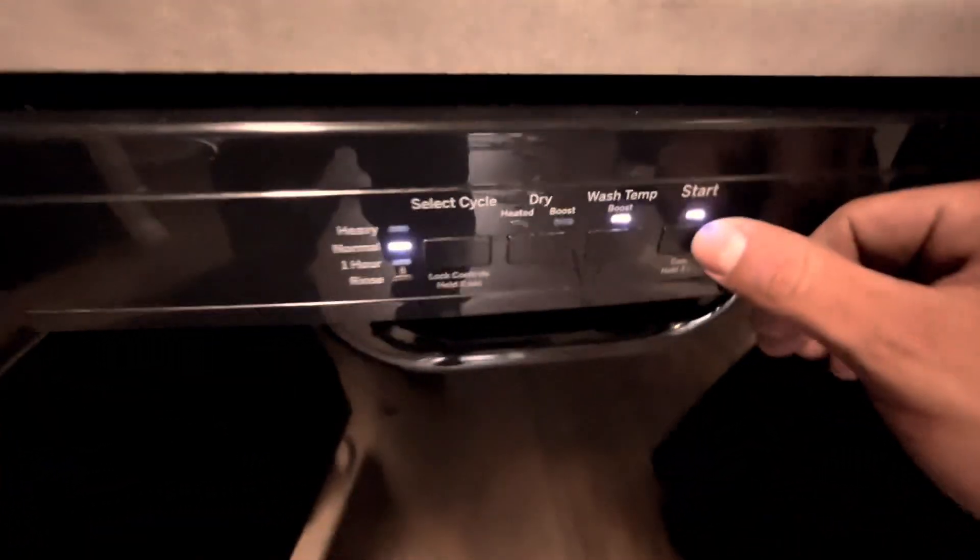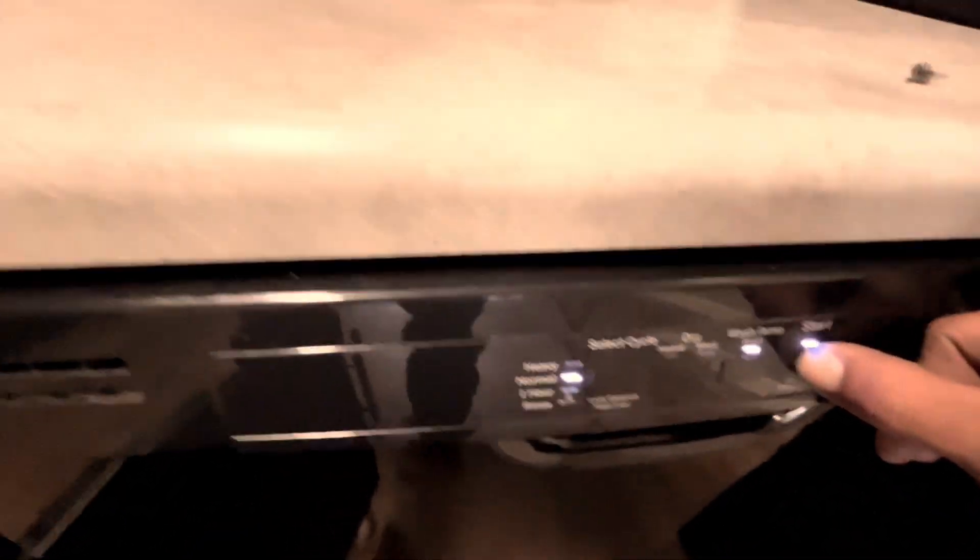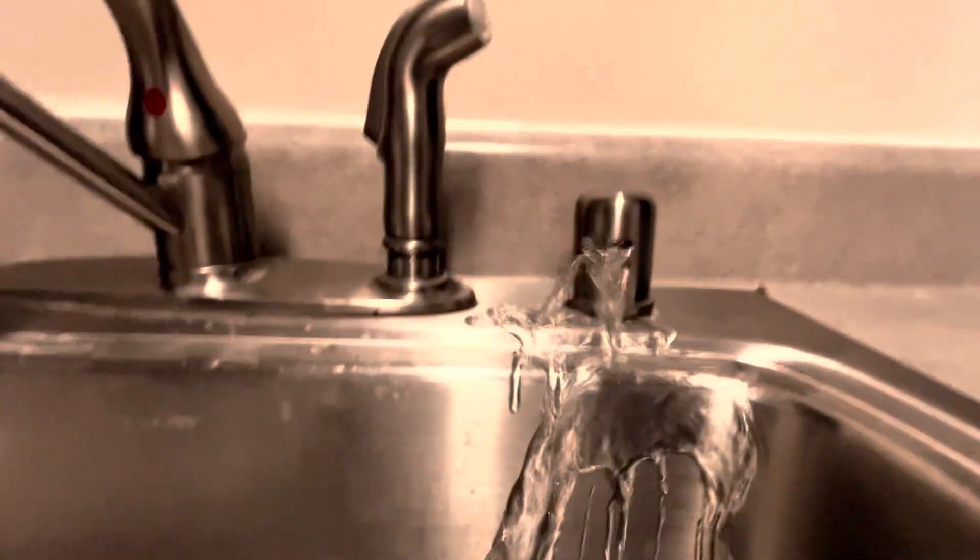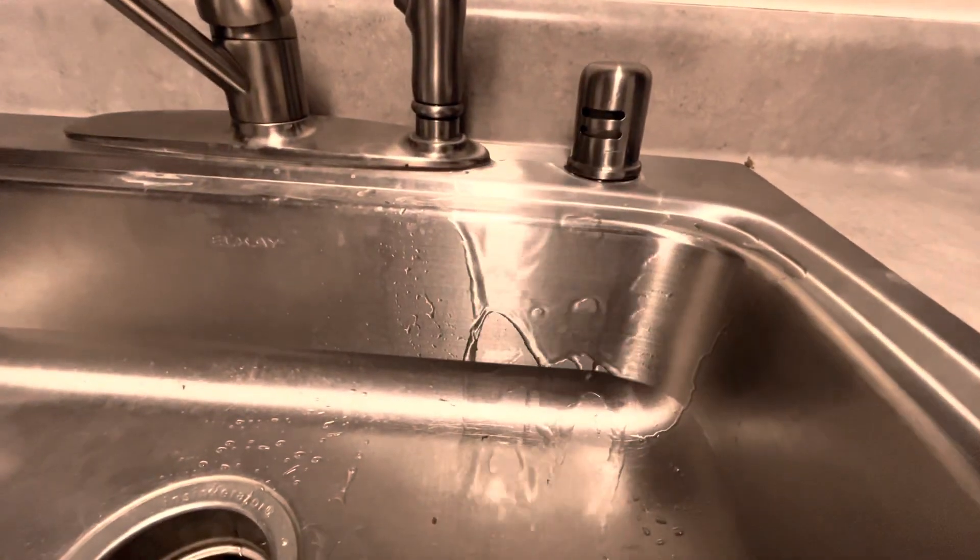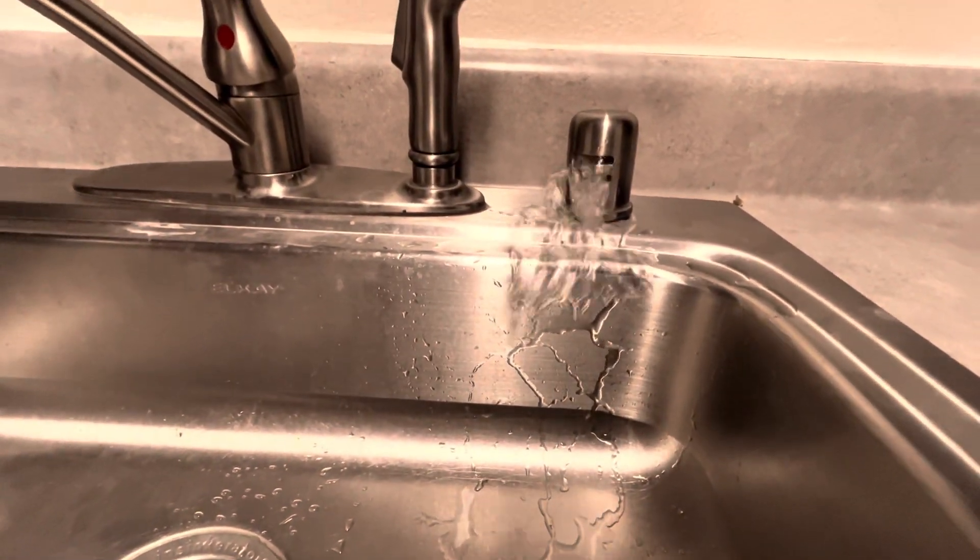We have our dishwasher right here, and when I fill it up slightly and then hit cancel to drain the machine, it's coming out of here. So the water should be draining directly into the garbage disposal, but there's a clog and it's coming out the relief valve.